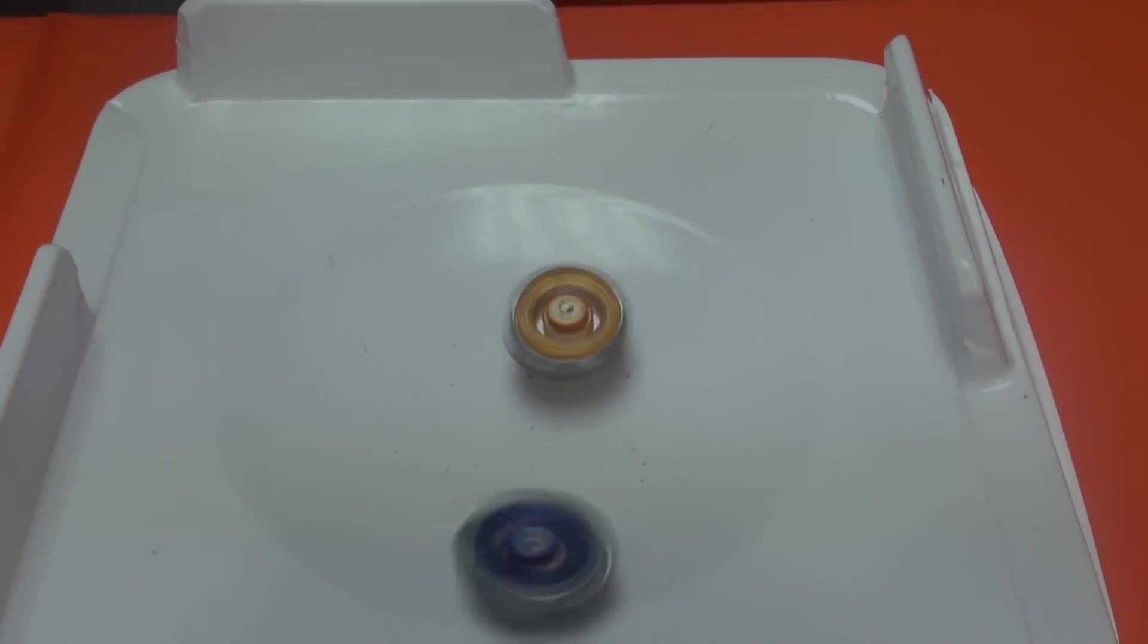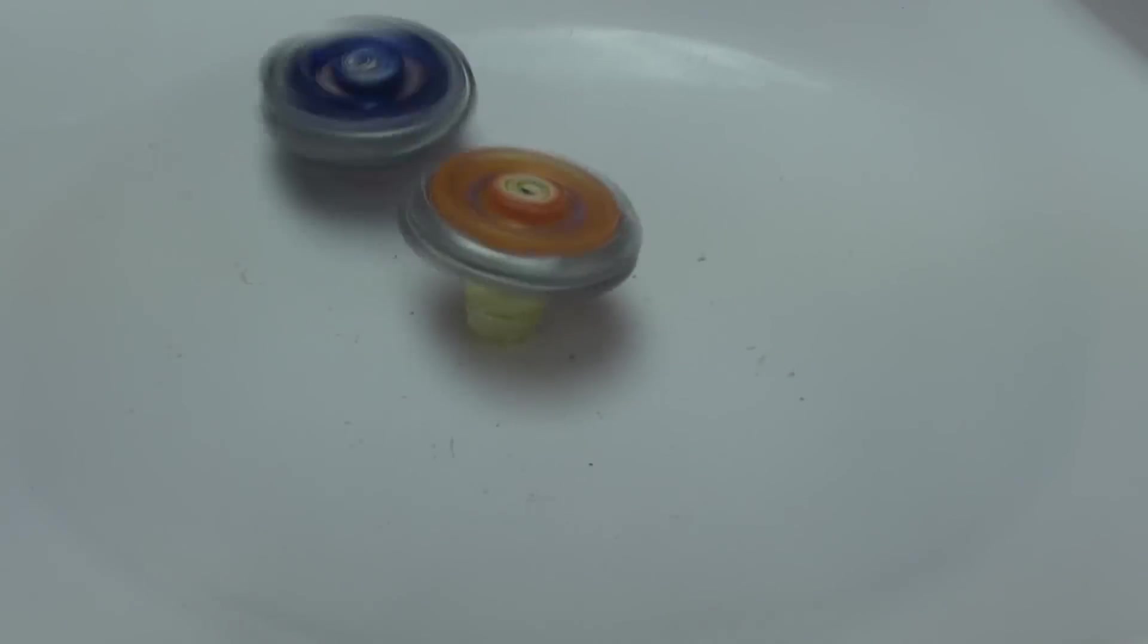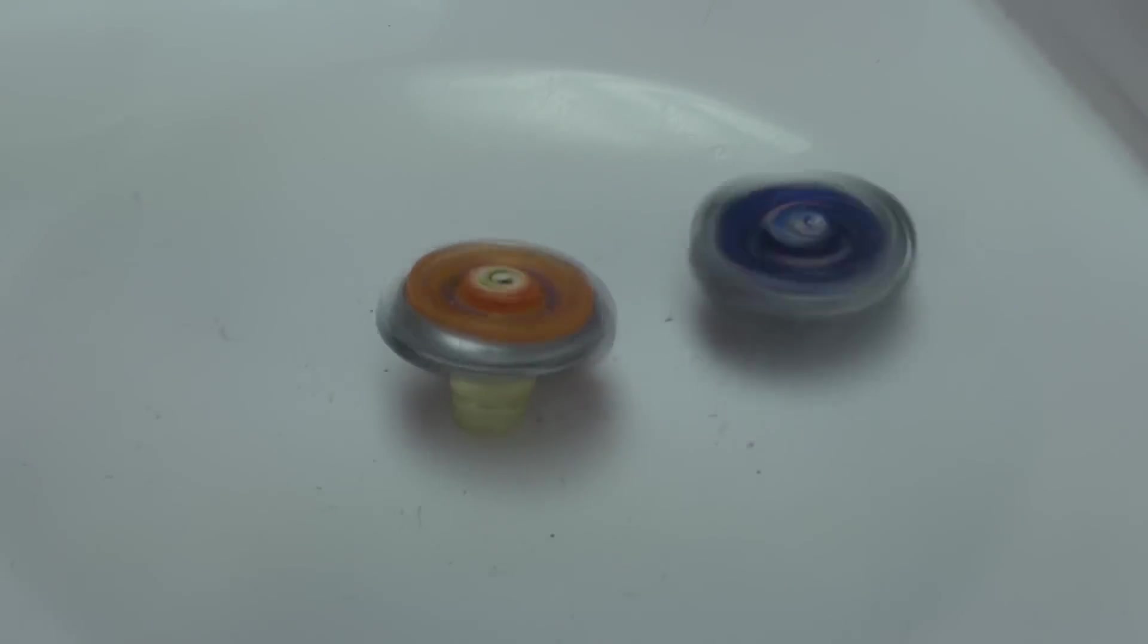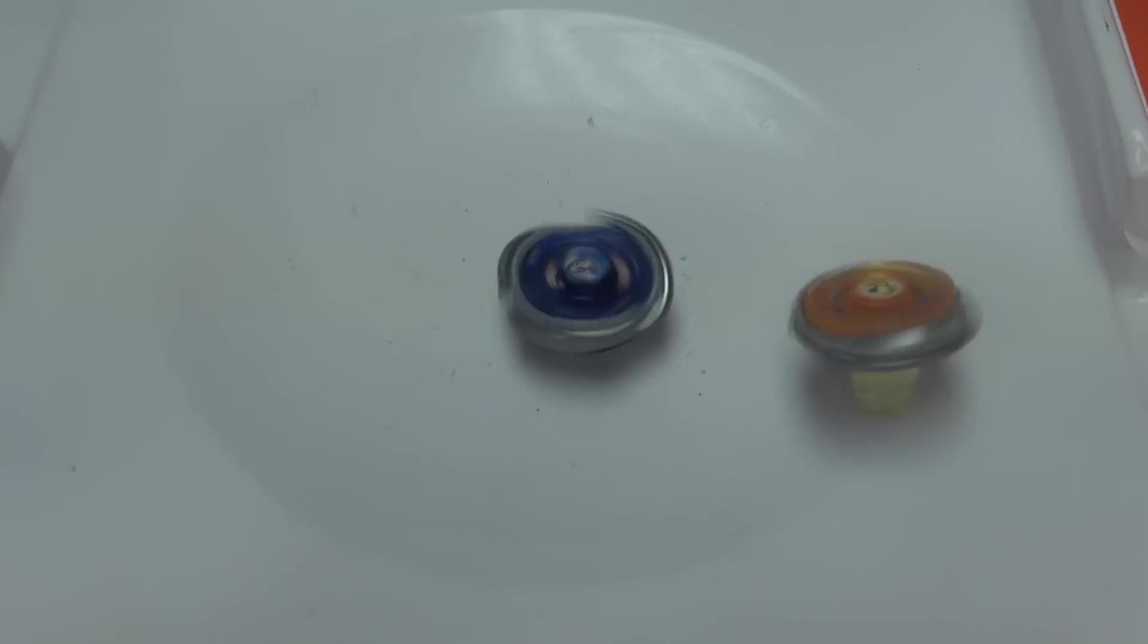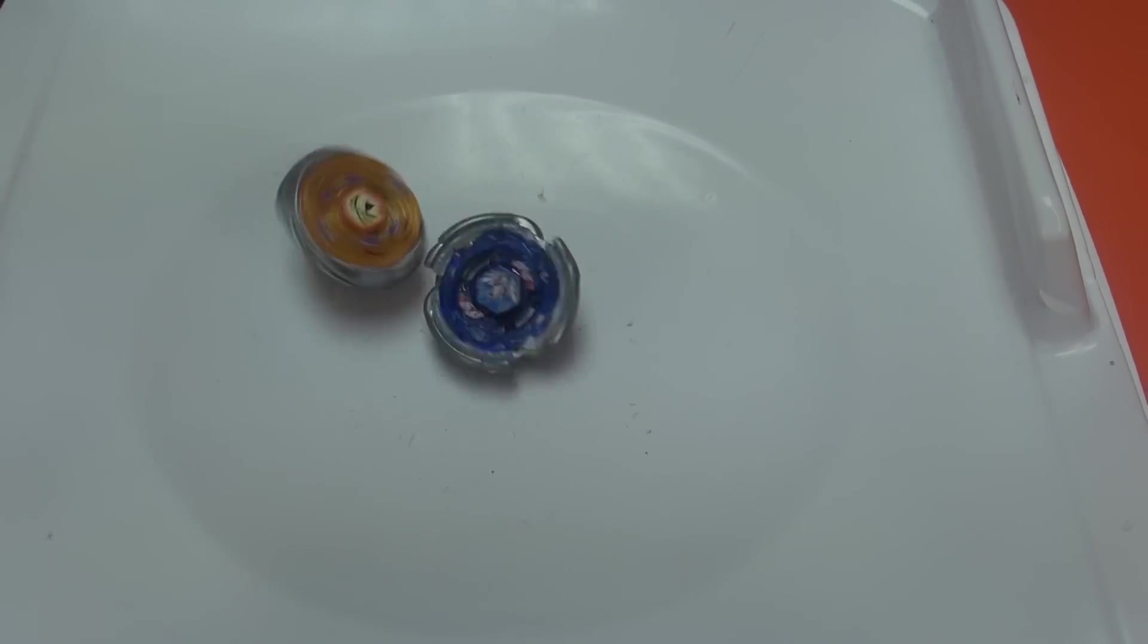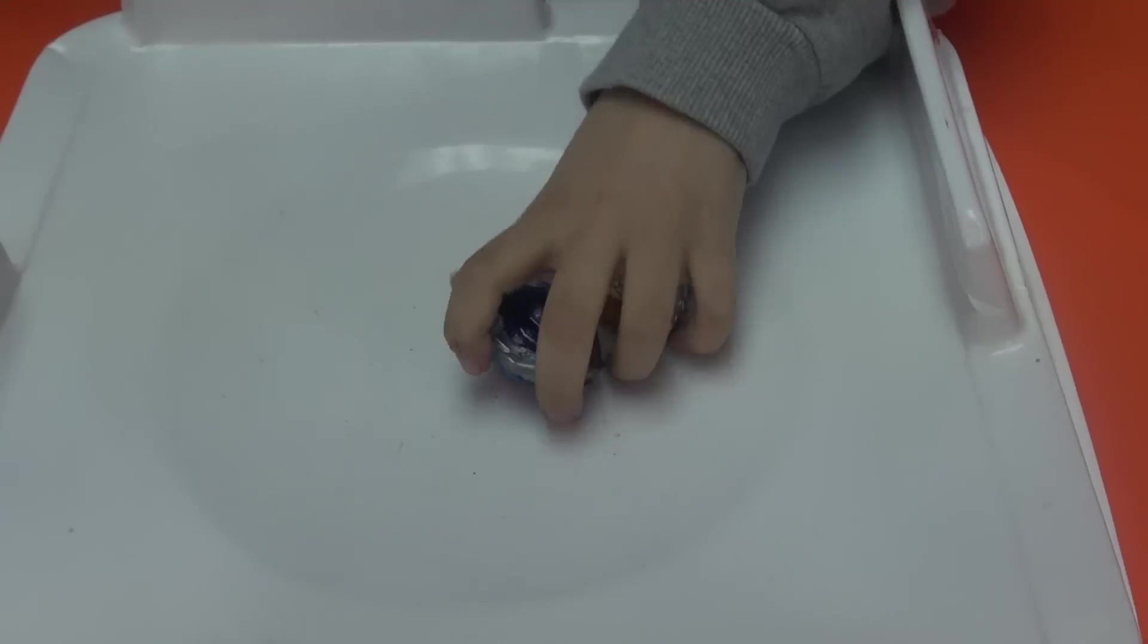So two Beyblades put, well, it starts out with one attack. Now it's just circling around Sagittario. So Sagittario is a stamina type. Whoa, major impact. Sagittario won this round. The score is now 1-0.